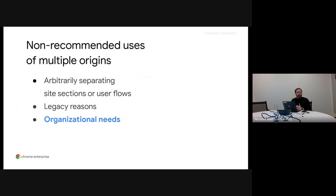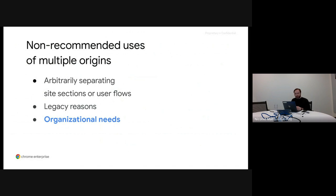We've also heard about organizational needs. For example, companies use subdomains to isolate the work that different internal teams work on so they can separate them. Another reason we've heard is that sometimes they want to have separate analytics reporting, and they use subdomains because it's easier in some analytics tools to visualize data from different subdomains. So they build the site this way for that reason. Here's the summary of the good and bad uses of multiple origins.